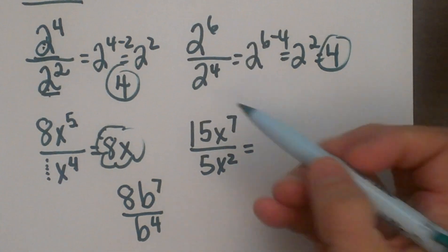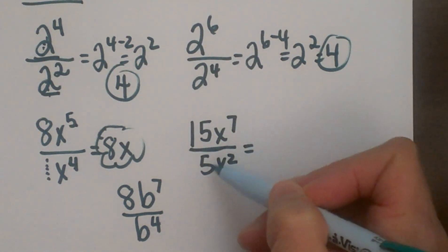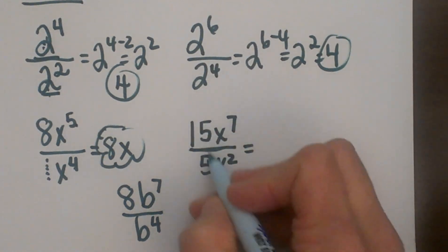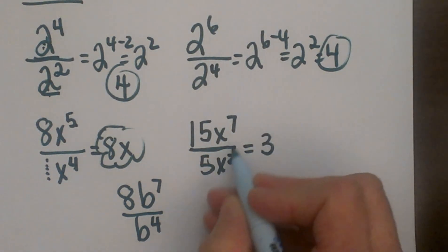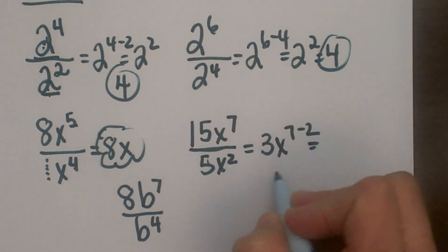Let's try one with a coefficient. We have 15x to the 7th divided by 5x squared. Divide your coefficients with normal division. Then for x to the 7th, we subtract 2 from the exponent, and we get 3x to the 5th.